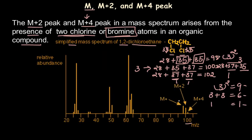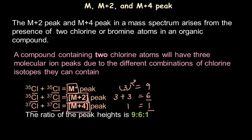Looking at the mass spectrum again, we can confirm the three peaks at M, M+2 and M+4 with the peak height ratio of 9:6:1. So in any organic compound where 2 chlorine atoms are present, we will observe these peaks at M, M+2 and M+4 in this ratio.